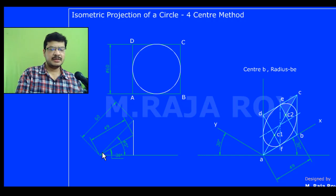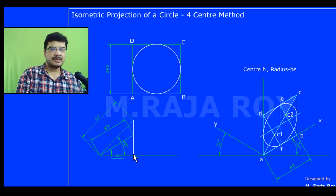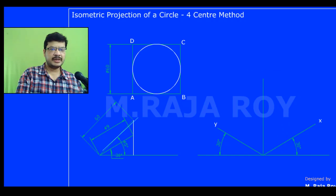The first step is to find the isometric length of 60. For that, I am drawing the isometric scale here. Along the 45-degree line I am taking the true length, then automatically if you draw a projector along the 30-degree line you will get the isometric length as shown here.